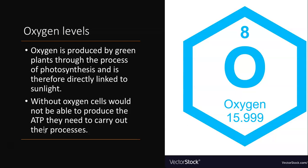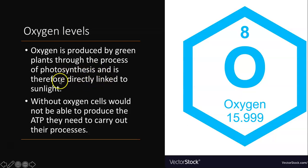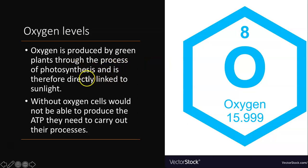The next abiotic factor is oxygen levels. Oxygen is produced by green plants through photosynthesis — it's actually a byproduct, a waste product, of that process. In order to produce oxygen from photosynthesis, you need the energy of sunlight. Without oxygen, cells would not be able to produce ATP, the energy they need to carry out their processes. This shows just how important sunlight is to something like oxygen levels — if you took out the sunlight and no oxygen was produced, all organisms that rely on oxygen to make energy would die. You can start to see how intertwined the abiotic factors are with the biotic.